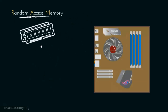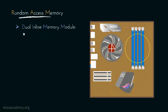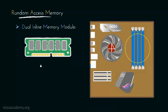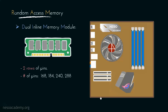Random Access Memory is a temporary storage that is interfaced using slots on the motherboard. These slots are called DIMMs, or Dual Inline Memory Modules. If we consider the architecture of RAMs, we can notice it has two independent rows of pins, which is why these slots are called Dual Inline Memory Modules or DIMMs. The total number of pins in RAMs can be 168, 184, 240, or 288, and on average modern motherboards have 2 to 4 DIMM slots.